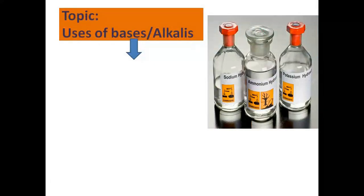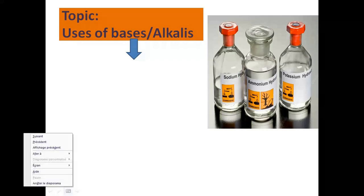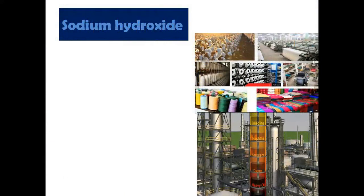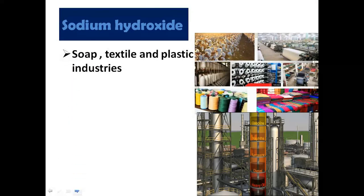Today our topic is the uses of bases and alkalis. The first alkali is sodium hydroxide. The use of sodium hydroxide is in soap, textile and plastic industry. Sodium hydroxide soap بنانے میں، textile اور plastic industry میں استعمال کیا جاتا ہے.